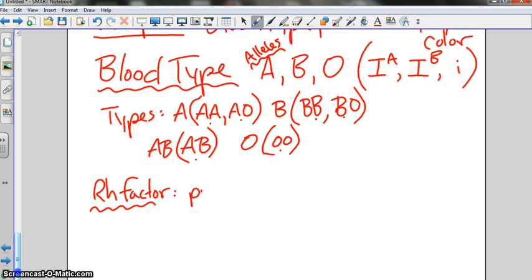So, you can be positive, which is dominant. Because it's dominant, there's two ways to be positive. And how is that? Plus, plus. You could be homozygous, or you could be heterozygous.